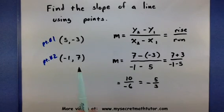So the slope of the line between these two points is a negative 5 thirds. If you'd like to see some more videos, please visit MySecretMathTutor.com.